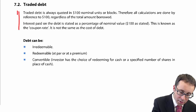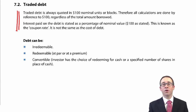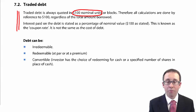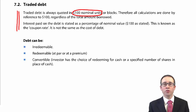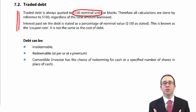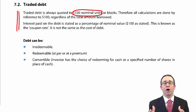You should be reasonably familiar with this from previous studies. Traded debt is always quoted in a $100 block. Essentially, there are 100 individual debentures, each one with a $1 nominal value. So if there are 100 of them at $1, the total nominal value is $100. It's just the way that debt is traded. If you look at the way shares are traded, it is quoted per share. When you buy traded debt, it is denominated in blocks of 100.